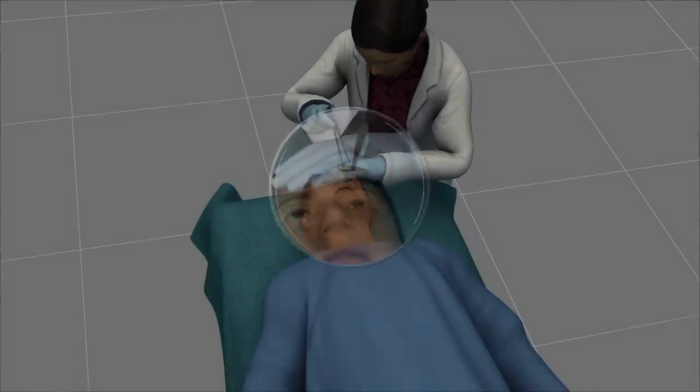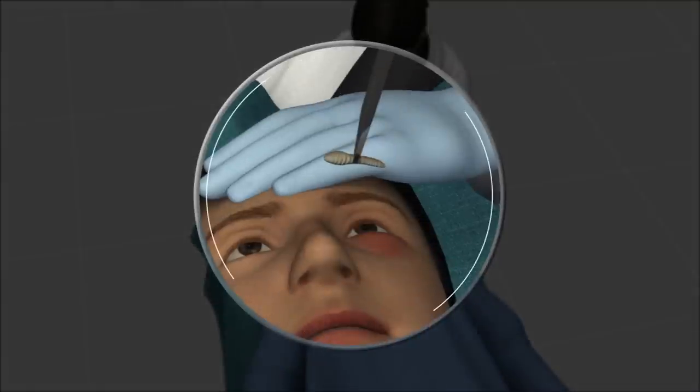Doctors first used a piece of basil leaf to lure the larva from its burrow before removing the rest of it using tweezers.